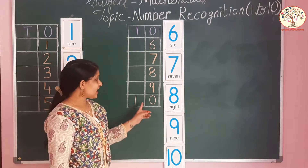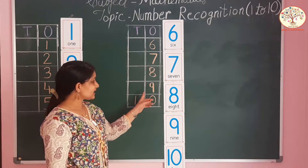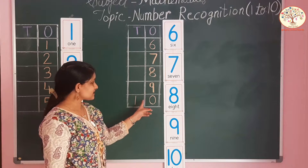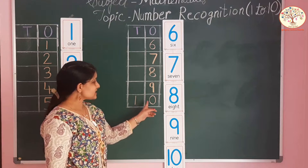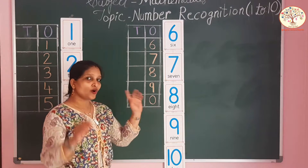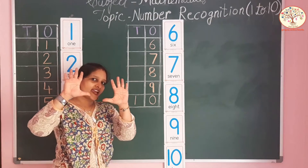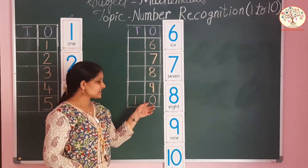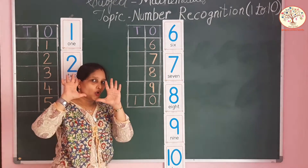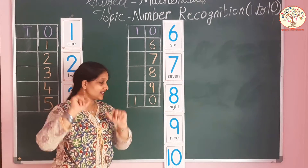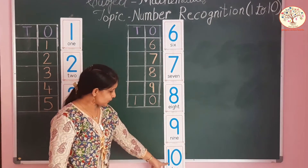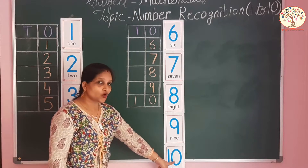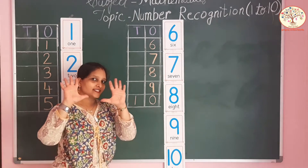And after number 9 comes one, zero — ten. One, zero — ten. One, zero — ten.